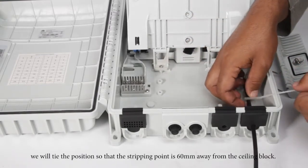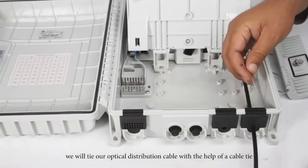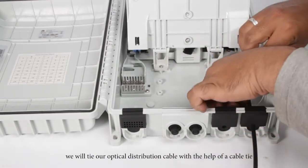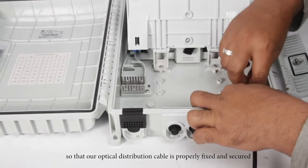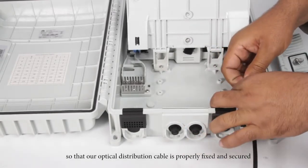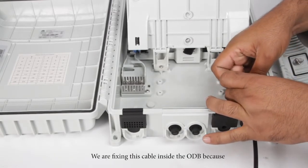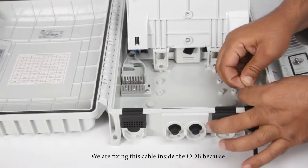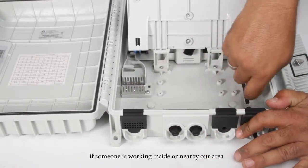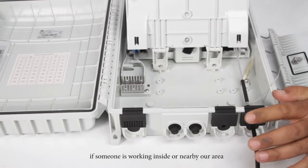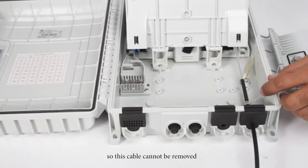Then we will tie our optical distribution cable with the help of a cable tie so that our optical distribution cable is properly fixed and secured. We are fixing this cable inside the ODB because if someone is working inside or nearby our area, this cable cannot be removed.